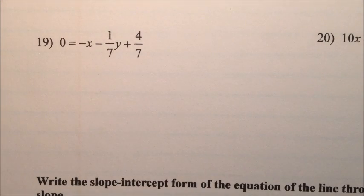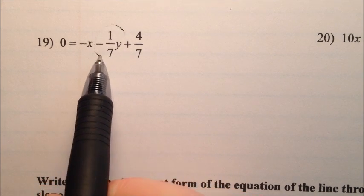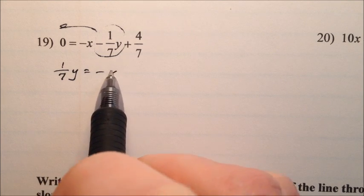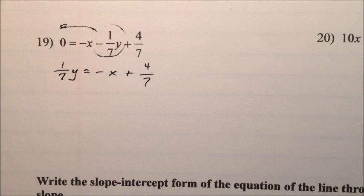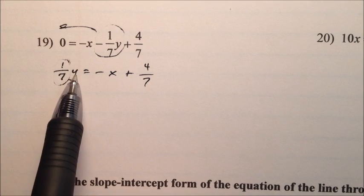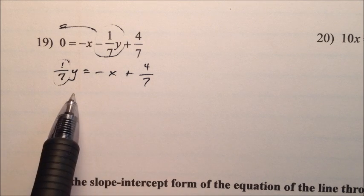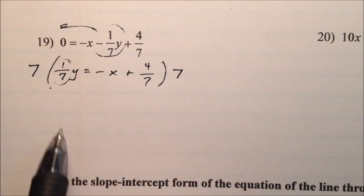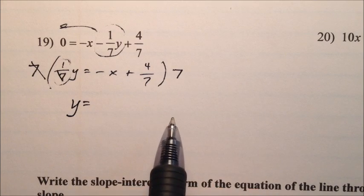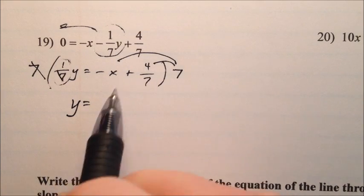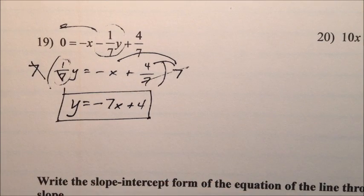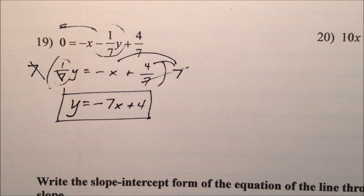In number 19, we have some fractions, but don't let those freak you out. Let's move this negative 1 seventh y to the other side — it becomes positive 1 seventh y — equals negative x plus 4 sevenths. We have this 1 seventh y out here, so we divide everything by 1 seventh, which is the same as multiplying both sides by 7. That gives us y equals negative 7x plus 4. So number 19 in slope-intercept form is y equals negative 7x plus 4.